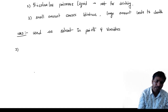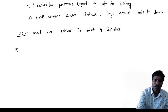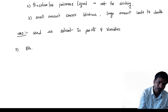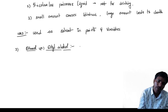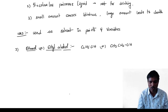Coming to the second alcohol — ethanol, or ethyl alcohol. The number of carbon atoms is 2, so the formula is C₂H₅OH. You can also write this as CH₃CH₂OH.